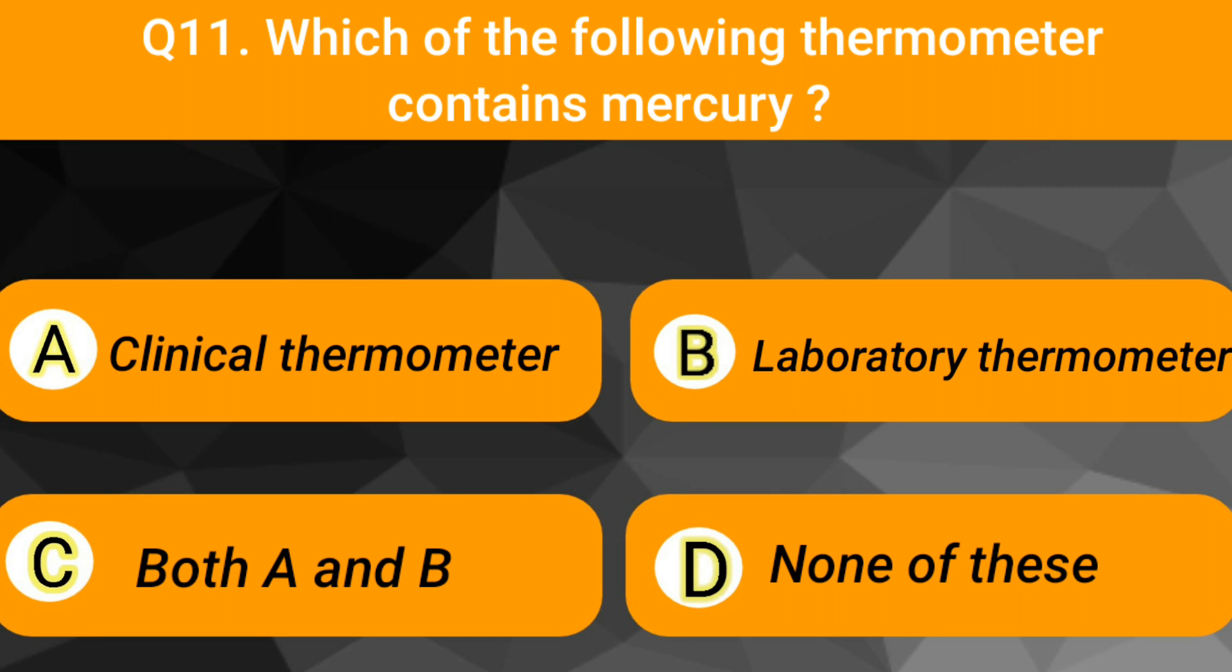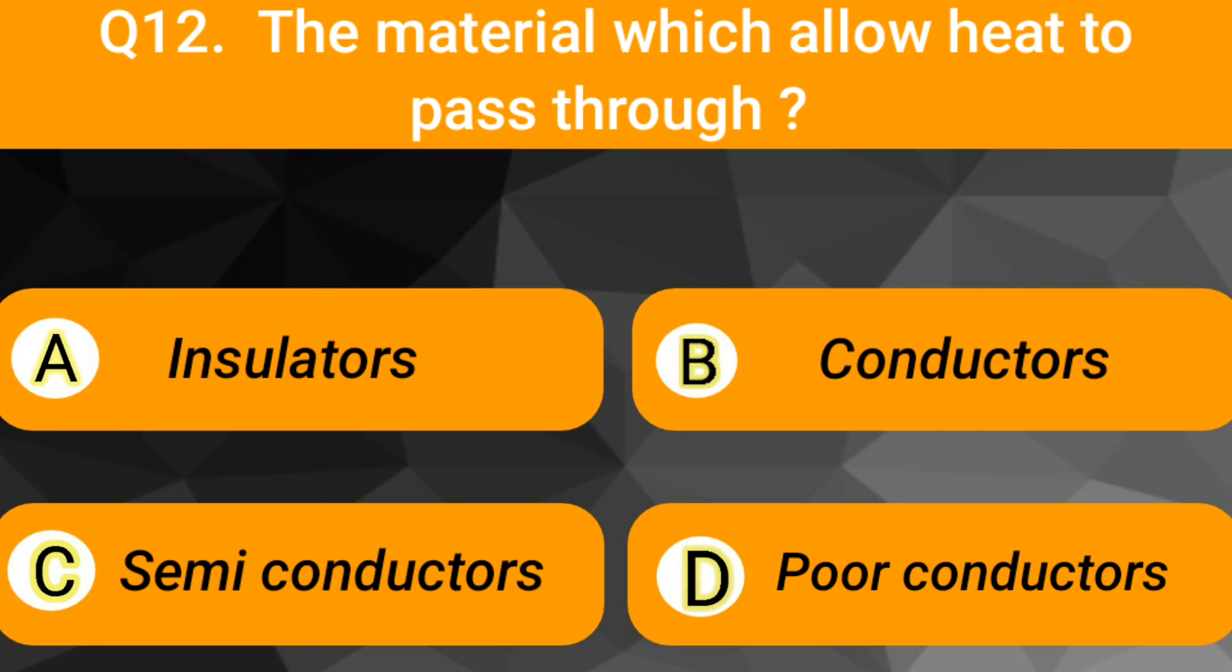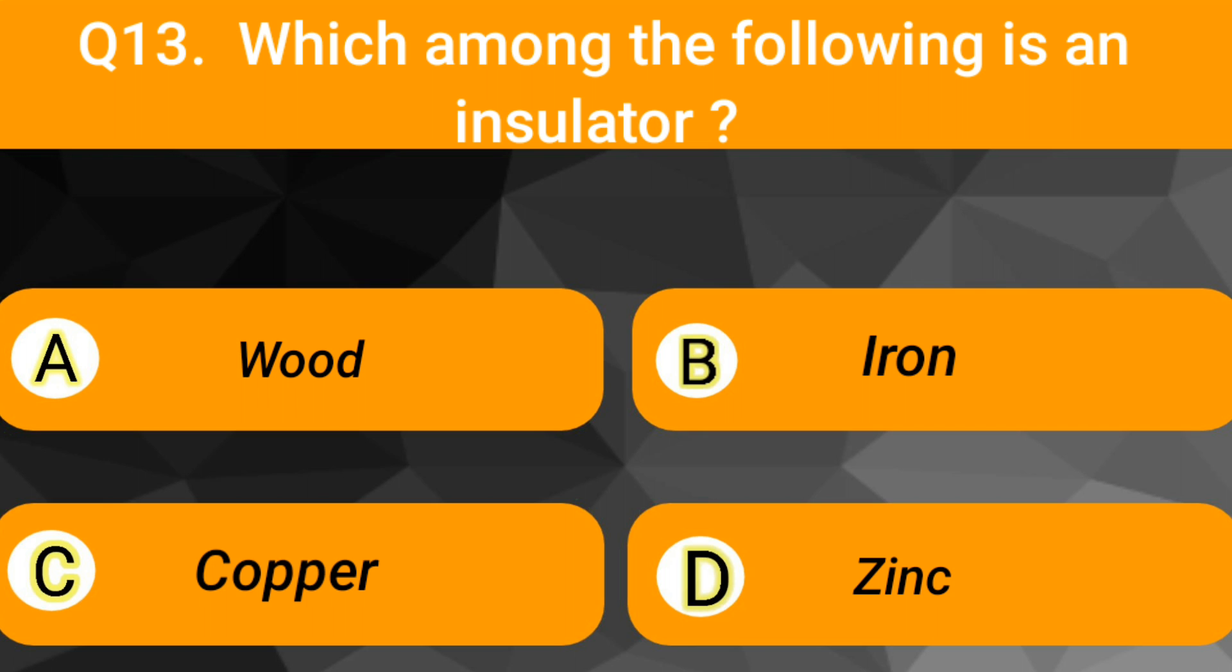Which of the following thermometer contains mercury? Both A and B. The material which allow heat to pass through. Conductors.